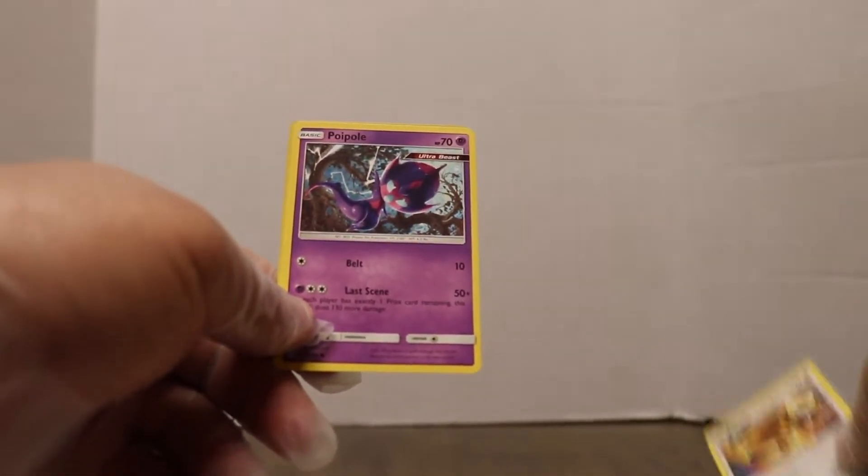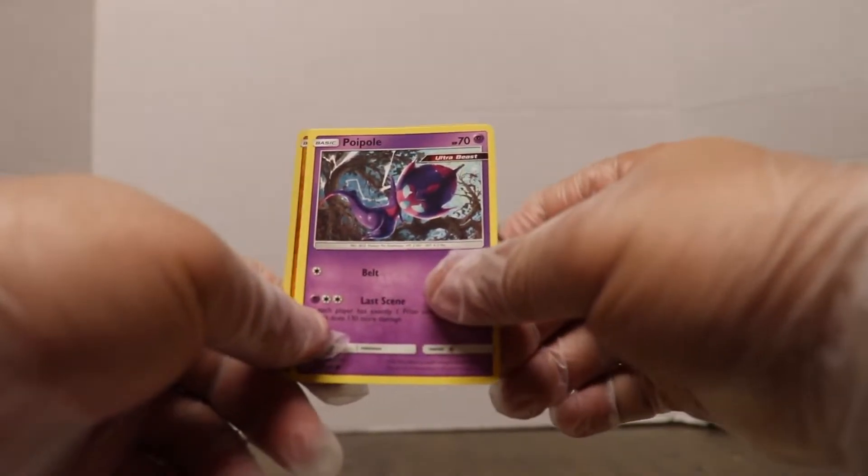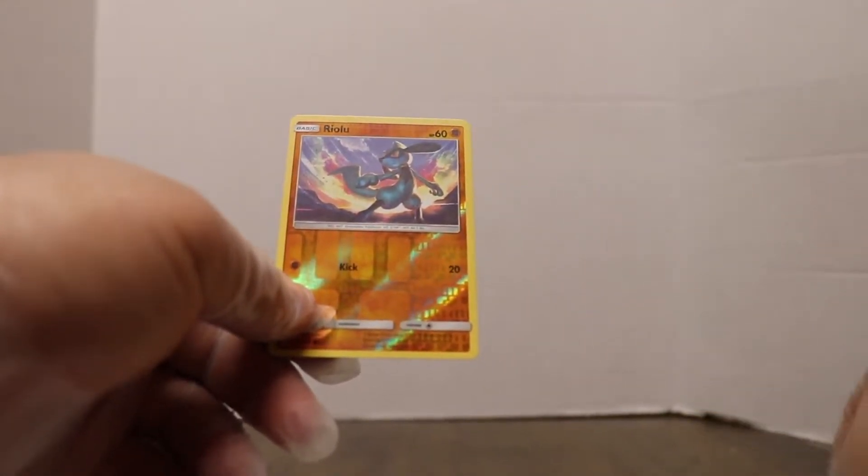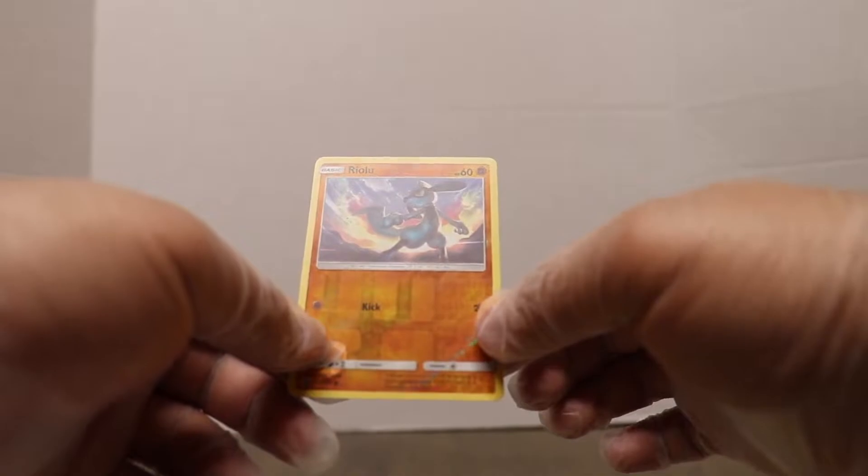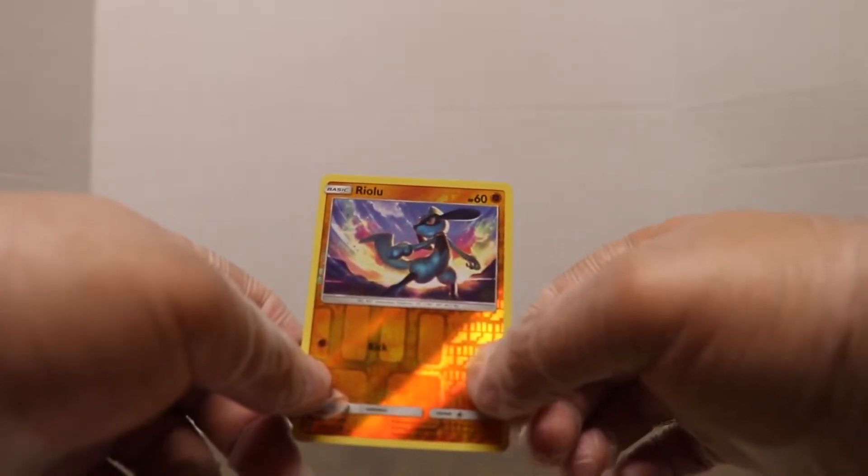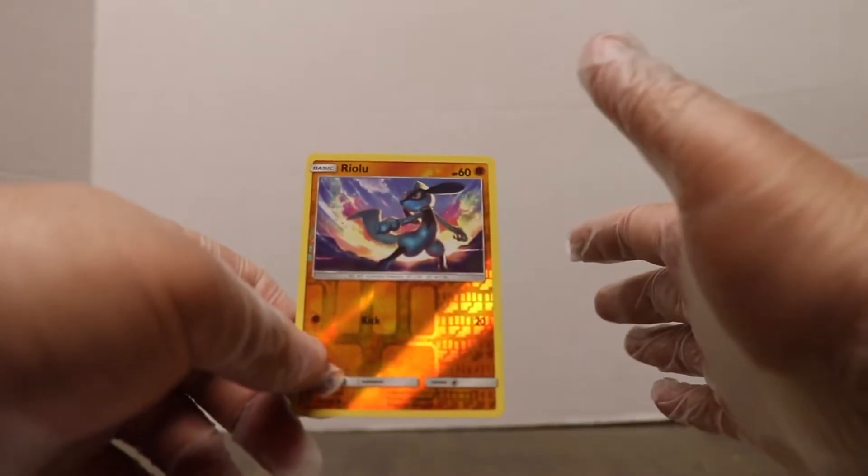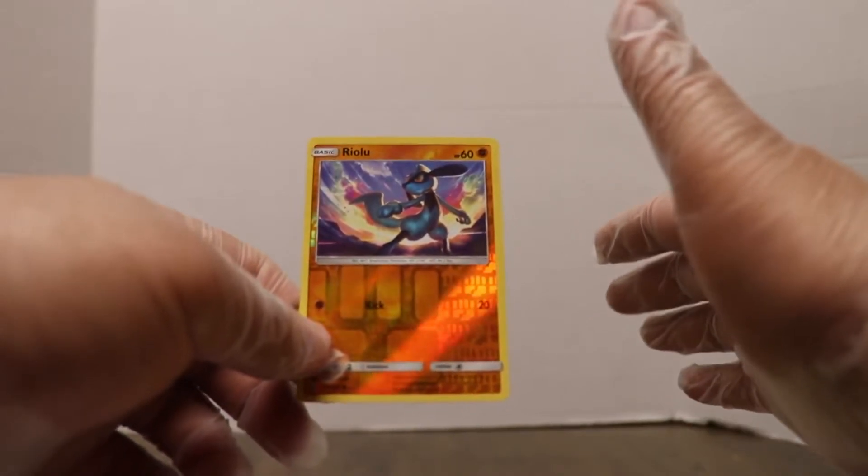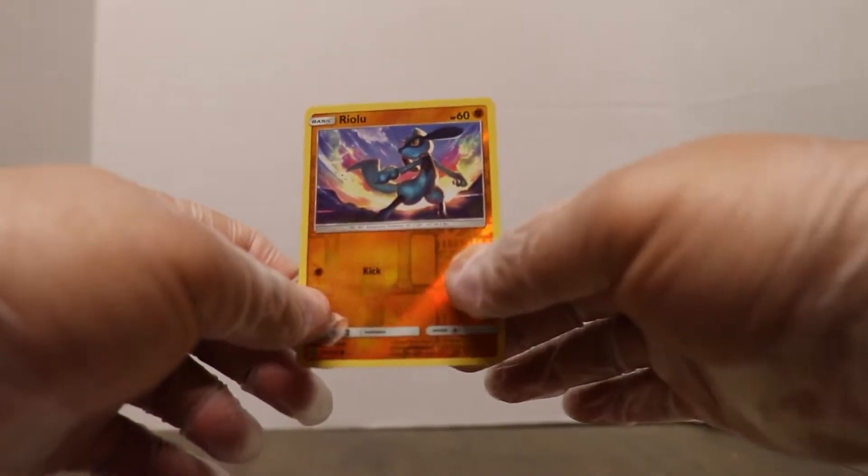Like, Bibarel. Like, I don't know how to say this. Poipole. Looks cool. And we have a reverse holo Riolu. Wow. Riolu. I could not say that. I don't know what happened there. But we have a reverse holo Riolu.